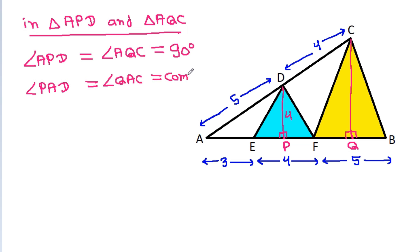will be equal to angle QAC, that is common. So by AA similarity, triangle APD will be similar to triangle AQC.